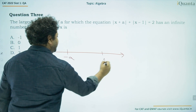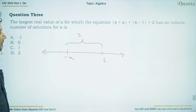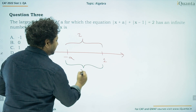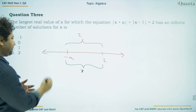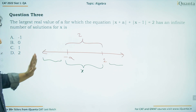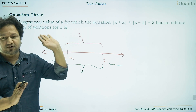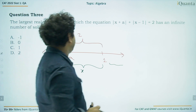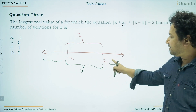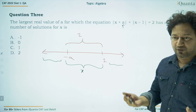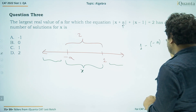For infinite solutions, the distance between −a and 1 must be exactly 2. Wherever you put x within the interval [−a, 1], the sum of its distances from −a and 1 always equals 2. So from −a to 1 we have infinitely many real values of x satisfying the equation. We need to identify the value of a for this to hold.